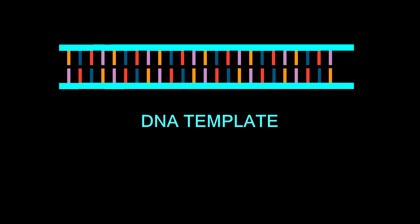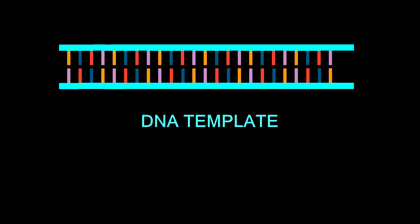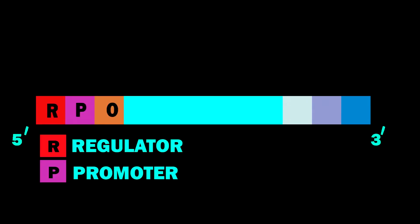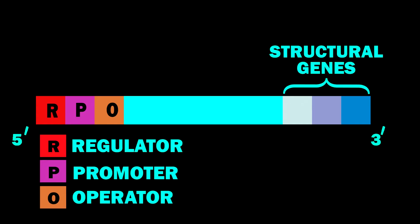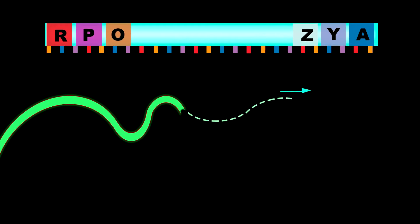If you look at the operon theory, you can see a DNA template or an operon template has some special areas where some special genes are situated. These genes are arranged from five prime to three prime in this manner: regulator, promoter, operator, and structural genes. These structural genes are Z, Y, and A. From a DNA strand, an mRNA strand is produced.